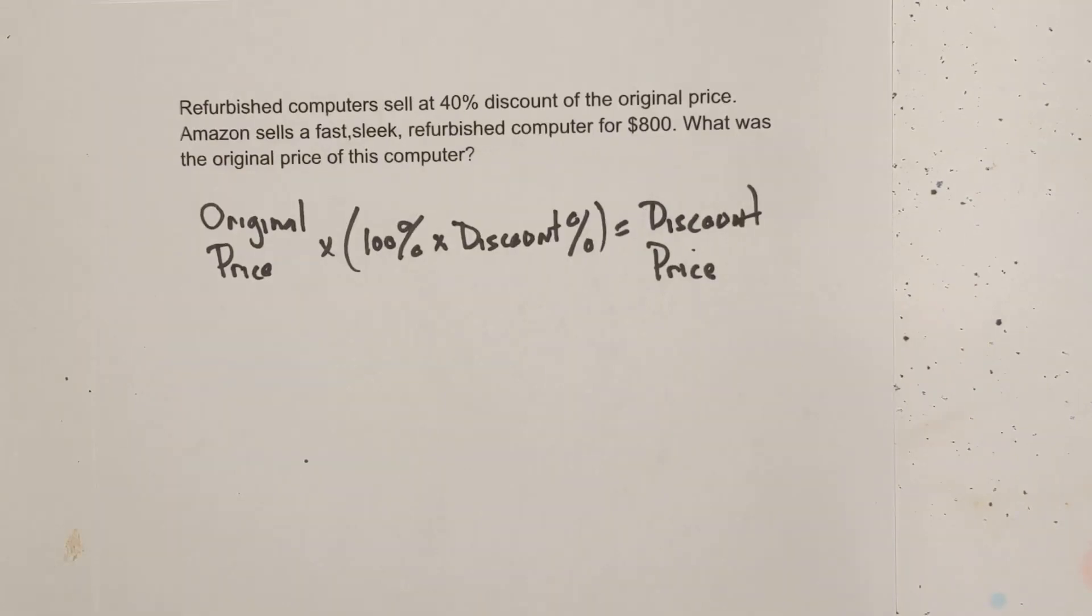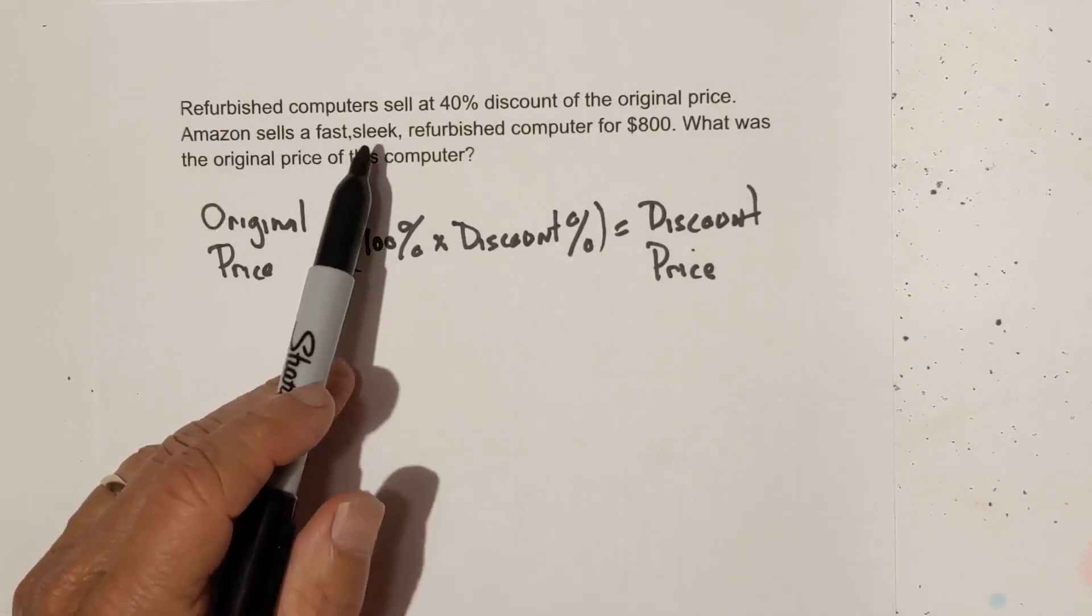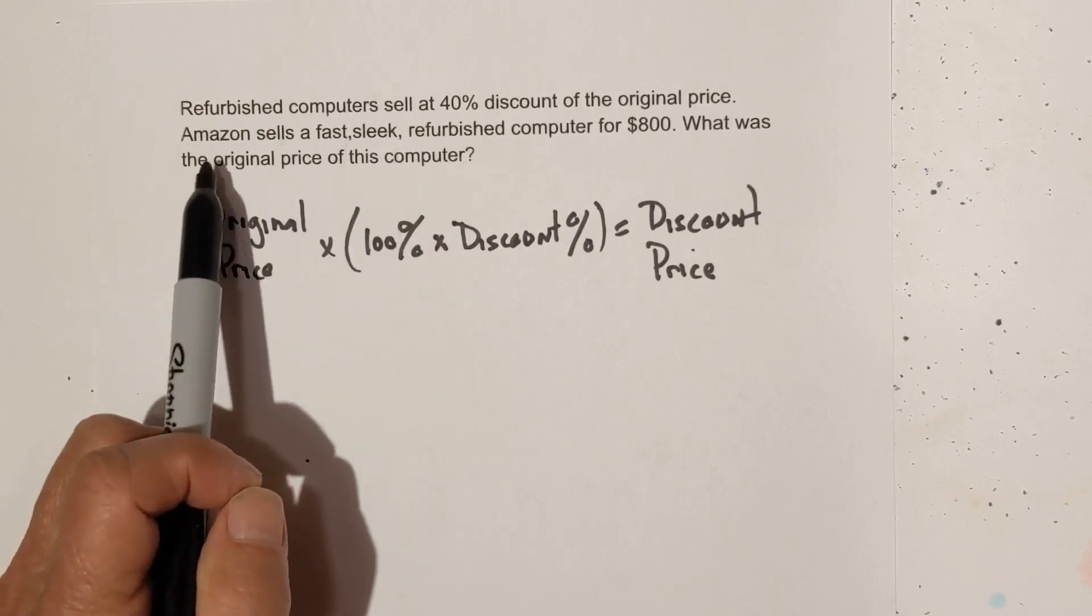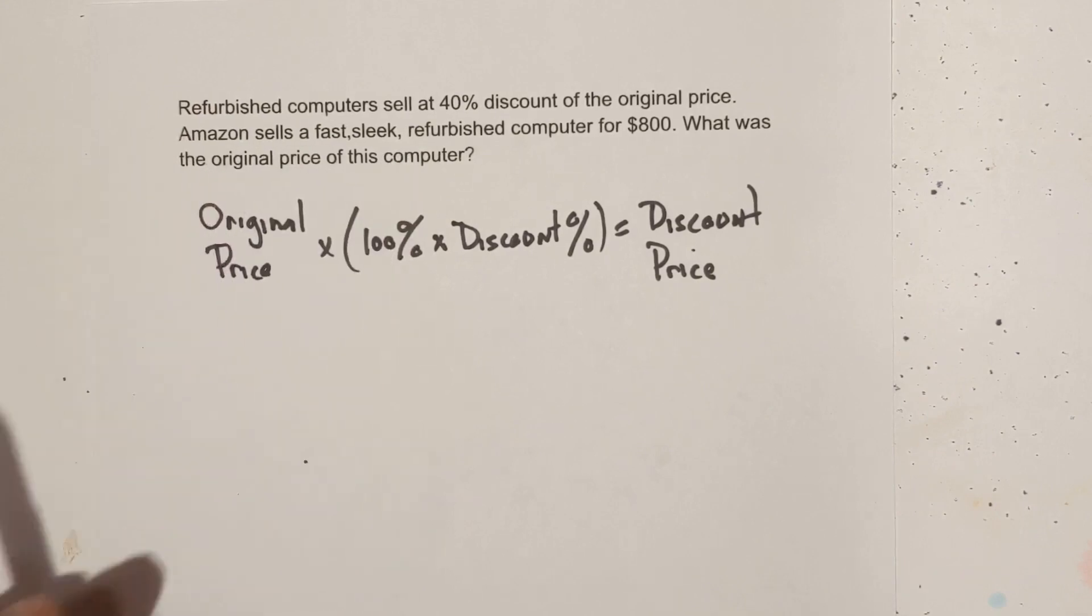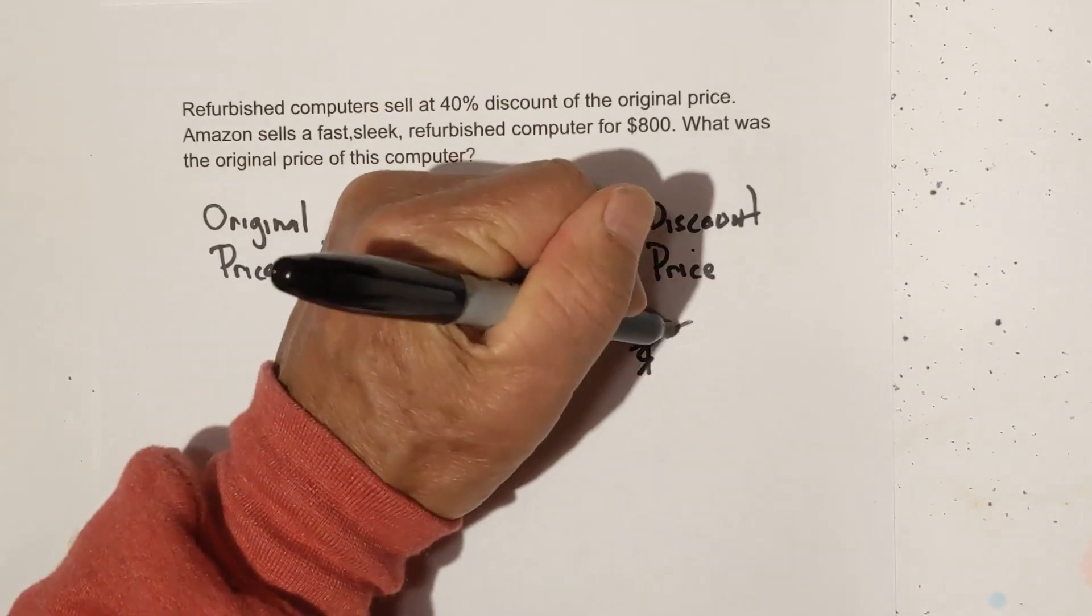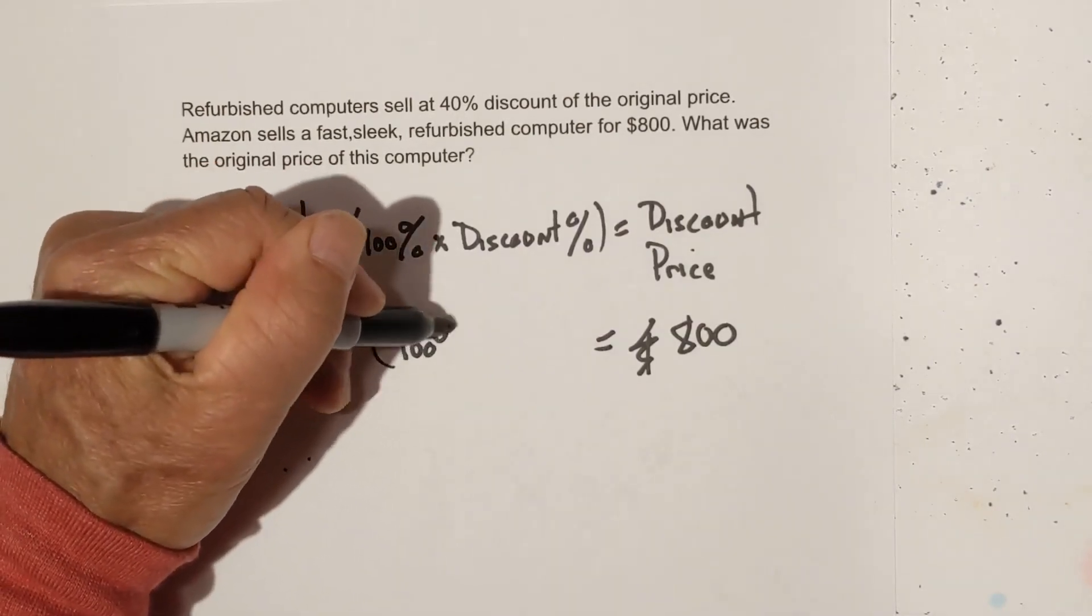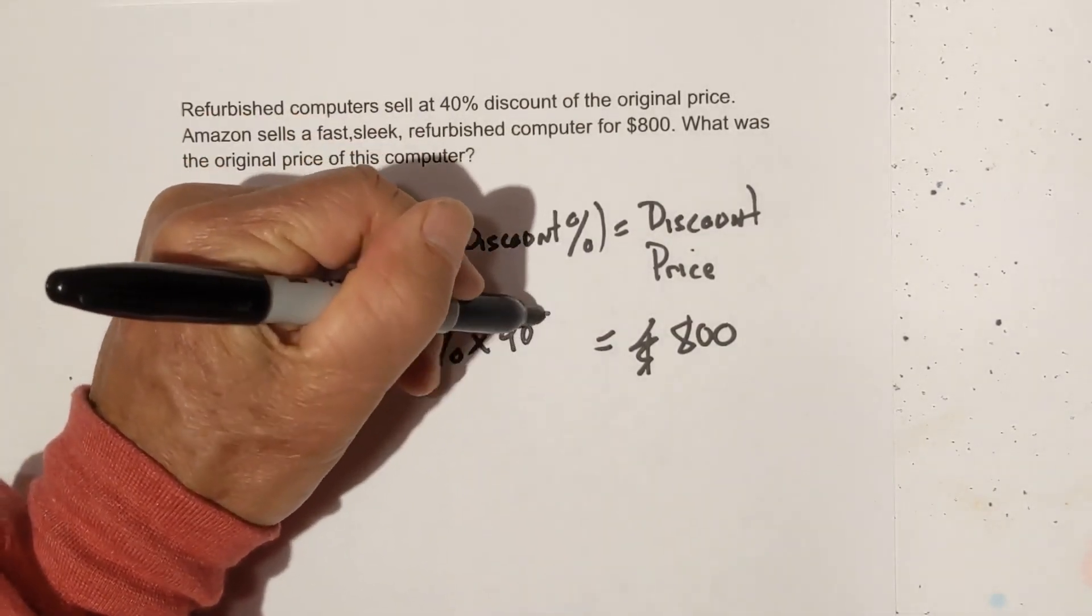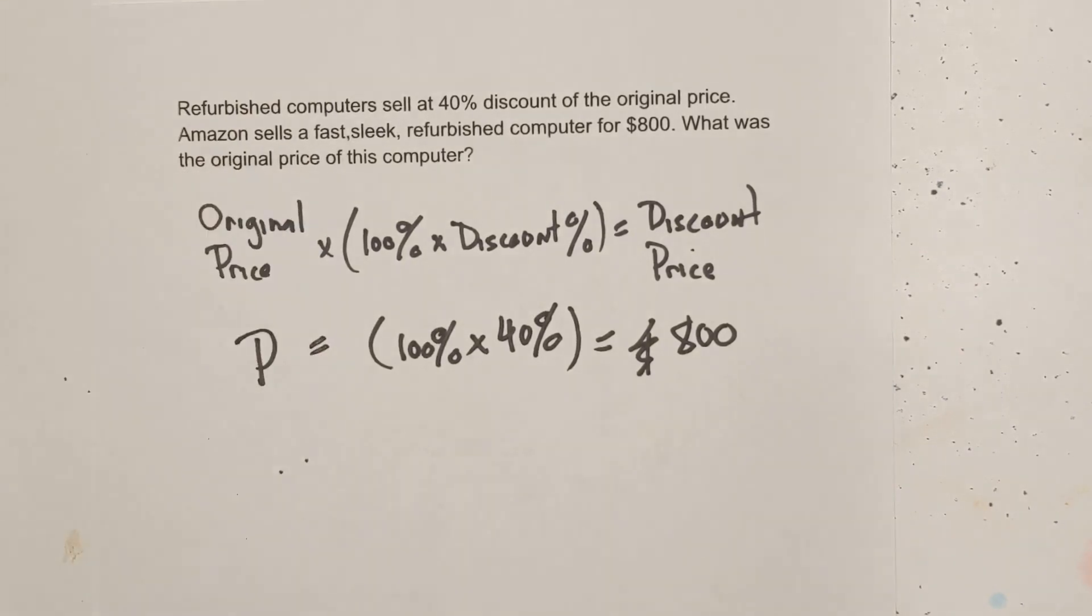Here we go on our last example. We have a refurbished computer. Refurbished computers sell at 40% discount of the original price. Amazon sells a fast, sleek, refurbished computer for $800. What was the original price of this computer? So once again, we know the discount price is $800. And we know we have 100% times 40% because 40% is the discounted price. And we're trying to find the original price, which we're going to list as P.